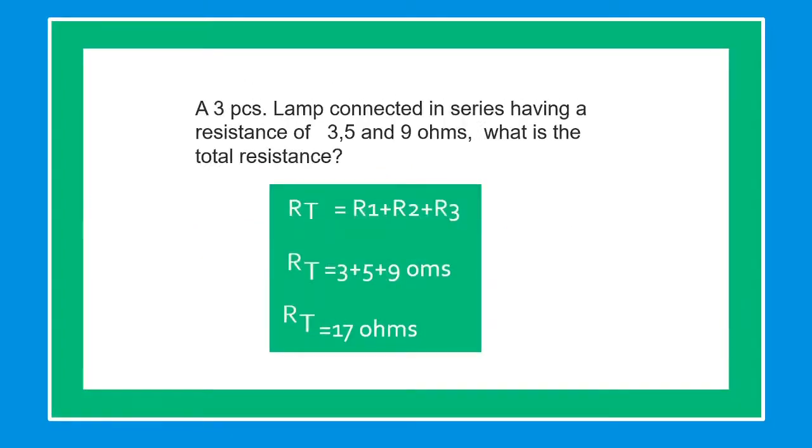In this next example, three lamps connected in series having a resistance of 3, 5, and 9 ohms. What is the total resistance? Since this is series, we just add the individual resistance to find the total resistance. RT equals 3 plus 5 plus 9 ohms, the total resistance is 17 ohms.